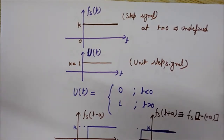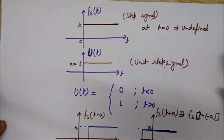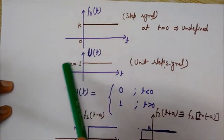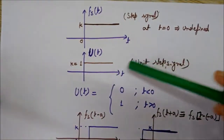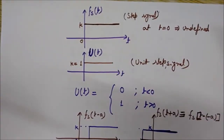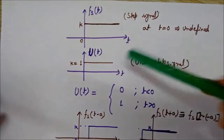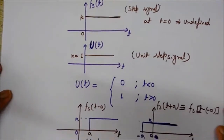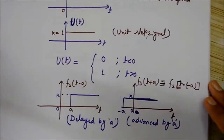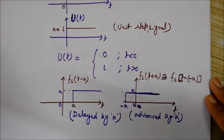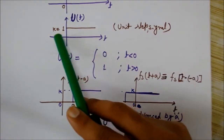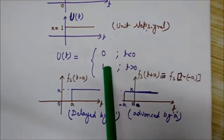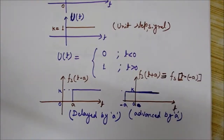Now we will see the unit step signal. What is a unit step signal? If we put the value of k equal to one — since unit means one — then it will be called the unit step signal. It is denoted by u(t), which is also a function of time. So we can define the unit step signal as: u(t) equals zero for t less than zero, and u(t) equals one for t greater than zero.